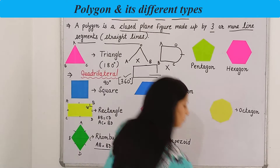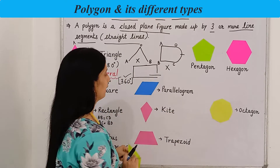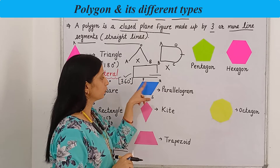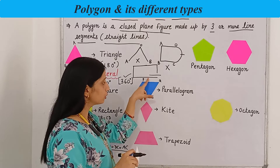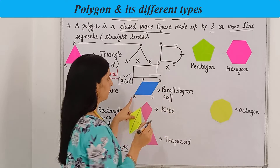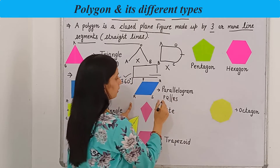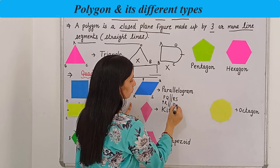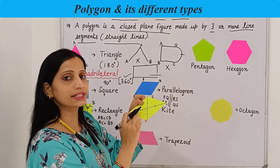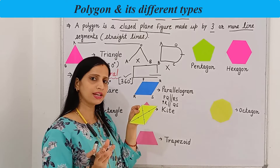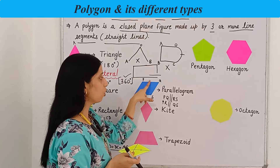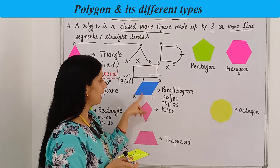Now let's come to a parallelogram. In a parallelogram, naming it PQRS, the opposite sides are equal as well as parallel to each other. PQ is parallel to RS, and PR is parallel to QS. It will have two diagonals which bisect each other but not necessarily at 90 degrees — in some parallelograms the diagonals bisect at 90 degrees but not in all.